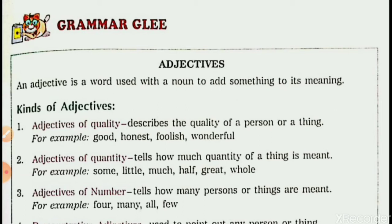I had explained adjective and kinds of adjective in my last video. Now today, before I move further, I would like to revise adjectives and its kinds. What are adjectives? Adjectives are describing words. They describe a noun. They tell us what kind of, how many, how much, what color, age, etc. a person, place, or thing is.